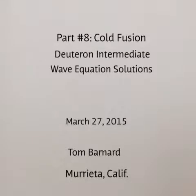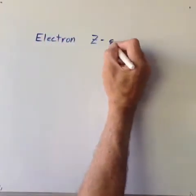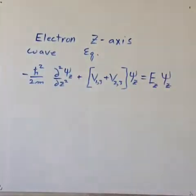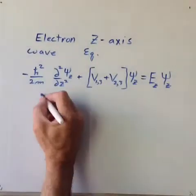Last time, in video 7, we solved the electron z-axis wave equation to give the z-axis wave function and energy as a function of the deuteron separation distance.